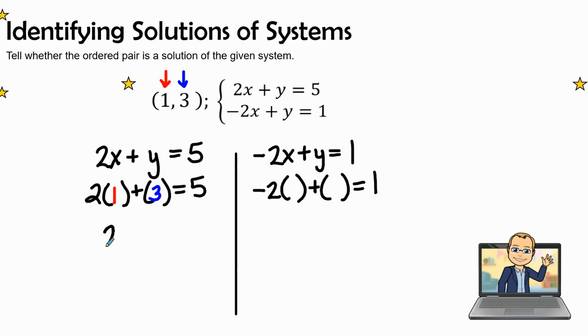So 2 times 1 is 2 plus 3. Absolutely. We see that it equals 5. Therefore, the answer is going to be yes. The point (1,3) is on this line when I graph it.